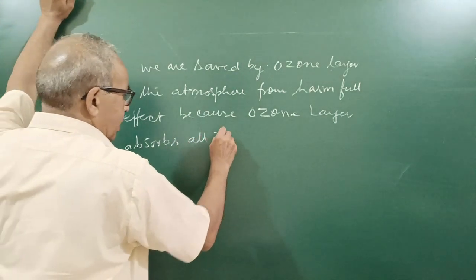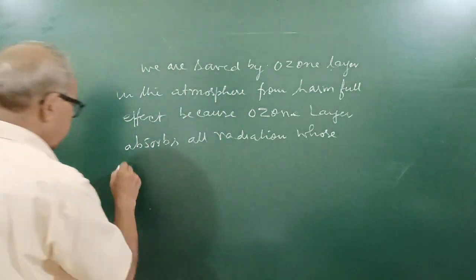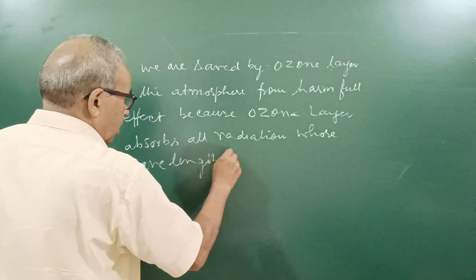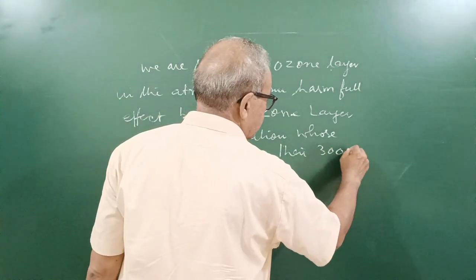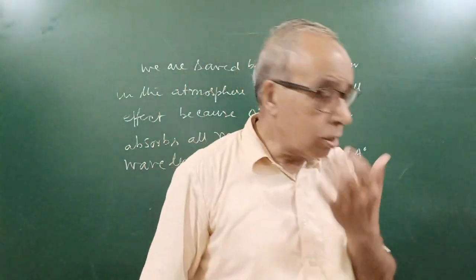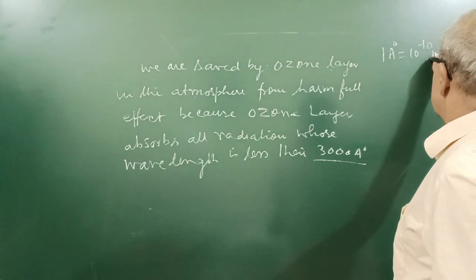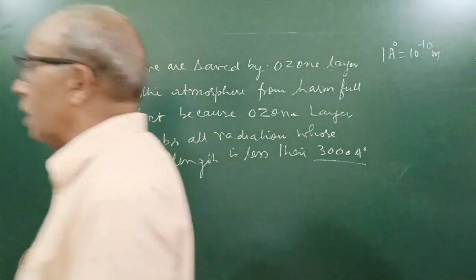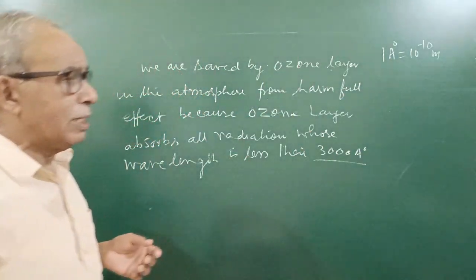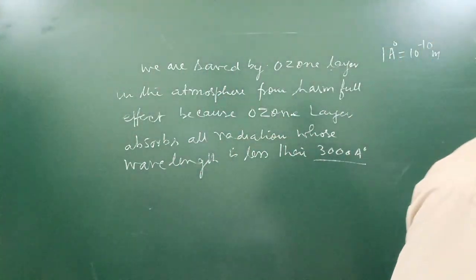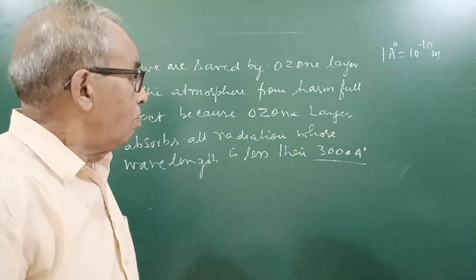Ozone layer in the atmosphere absorbs all radiation whose wavelength is less than 3000 angstrom. One angstrom means 10 to the power minus 10 meter, so 3 into 10 to the power minus 10 meter will be absorbed by ozone layer. Not only sun, there are some other bodies, galaxies from where we can get some high frequency radiation. All radiation may be coming; they are all absorbed by ozone layer.